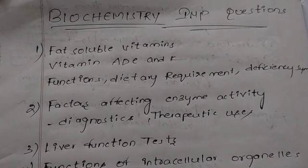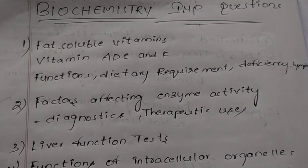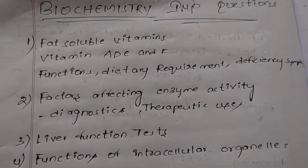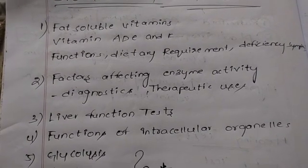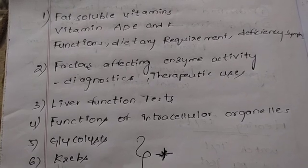First question: Fat-soluble vitamins - Vitamin A, D, E, K. What are their functions, dietary allowance, and deficiency symptoms? Second question: Factors affecting enzyme activity, diagnostics, and therapeutic uses. For short answers, you have to prepare liver function test and renal function test.